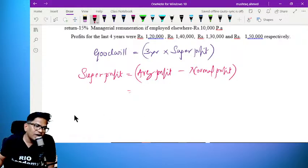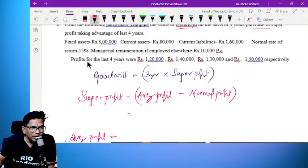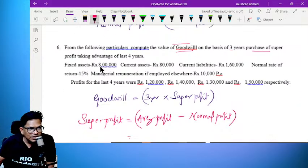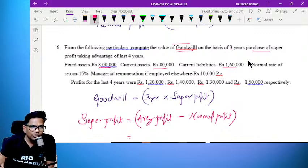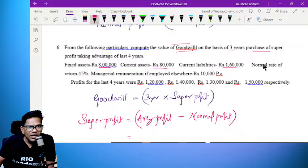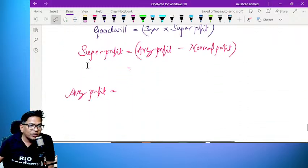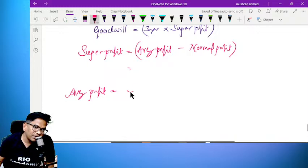First, we need to calculate adjusted average profit. How do you manage the fixed asset, current asset, current liability? How do you manage the remuneration of 10,000 per annum? We need adjusted average profit.